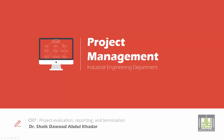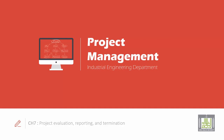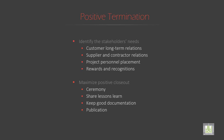Bismillahirrahmanirrahim. We'll see the remaining slides. First is positive termination. So what is this positive termination? It identifies the stakeholders' needs — stakeholders are the owners, their needs. For example, a customer long-term relationship means building up relationships with the customer to gain customer loyalty. These long-term relationships can boost your sales, increase the customers, and improve the overall business strategy.